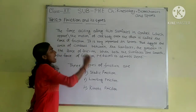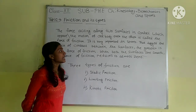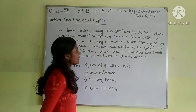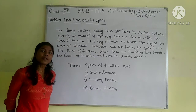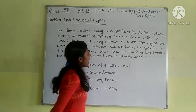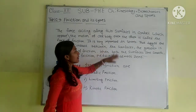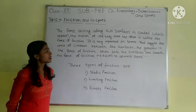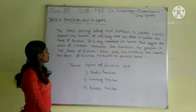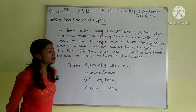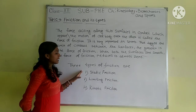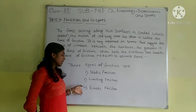The force acting along two surfaces in contact, or the motion of one body over the other, is called the force of friction. Then lagging the area of contact between the surfaces, the vector is the force of friction. When both the surfaces are smooth, the force of friction reduces to almost zero. Three types of friction: one, static friction; two, limiting friction; three, kinetic friction.